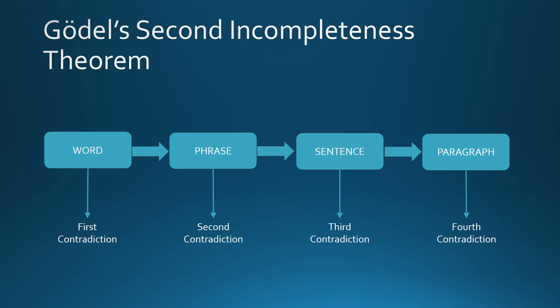We can try to substitute a word by a phrase, a phrase by a sentence, or a sentence by a paragraph, but we can never eliminate contradictions because each additional word has multiple meanings. As we try to substitute words with phrases, phrases with sentences, or sentences with paragraphs, the number of contradictions will increase. To eliminate these contradictions we have to eliminate many words, phrases, sentences, and paragraphs, thereby continuously limiting discourse. This is Gödel's second incompleteness theorem.